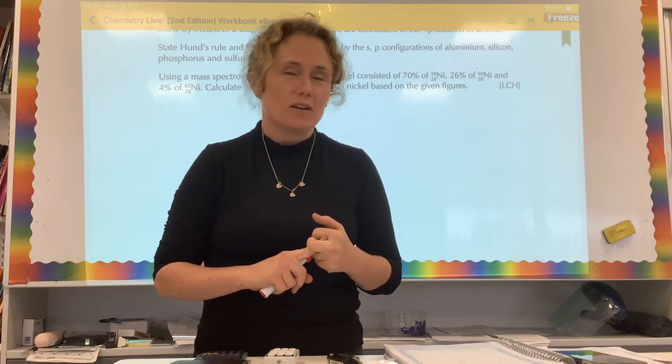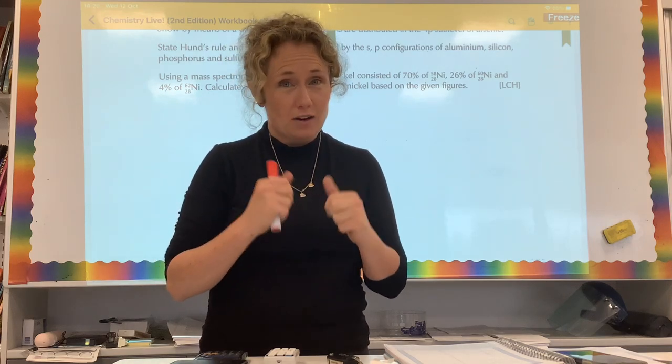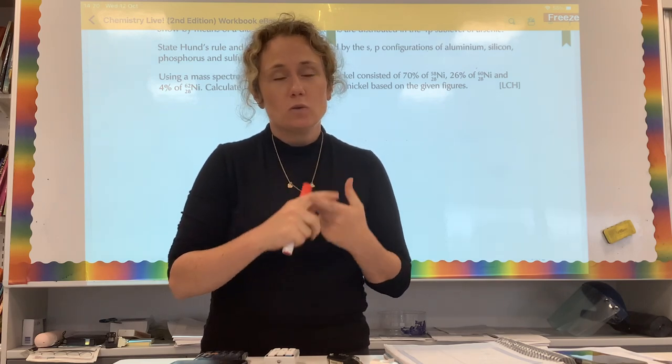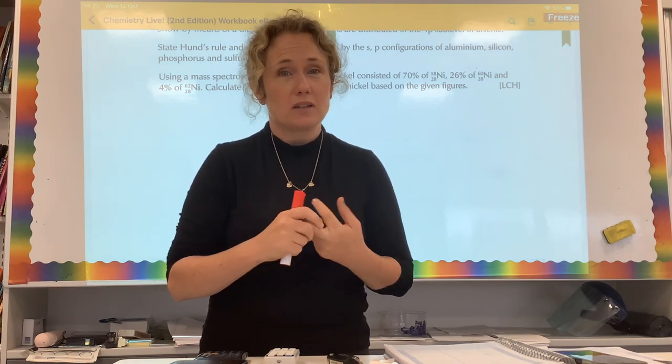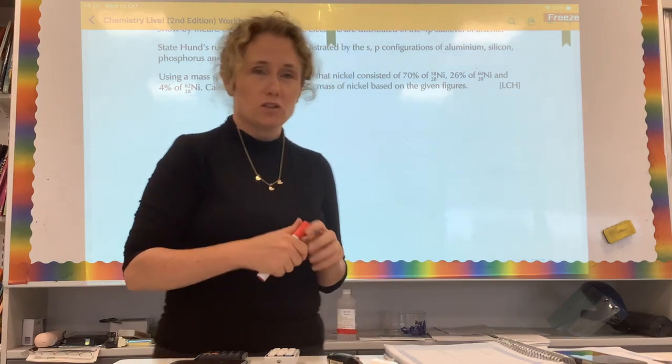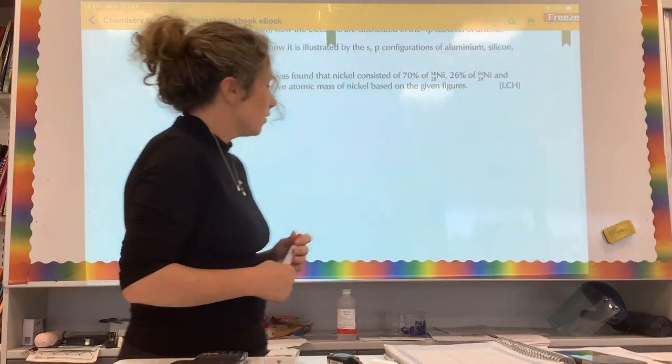So the relative atomic mass of an atom is an average mass of an atom, taking into account its abundance of isotopes on a scale where carbon-12 isotopes has a mass of 12 atomic mass units. That's it. That's your definition. You need to learn it off.